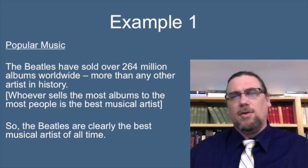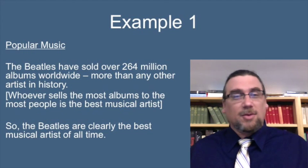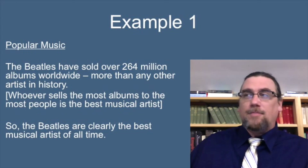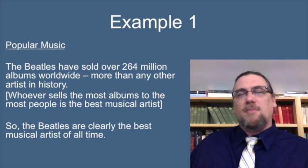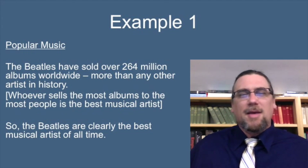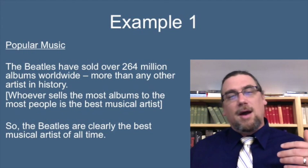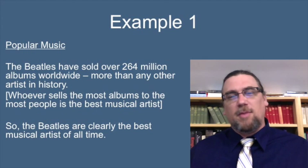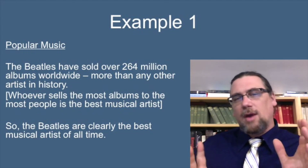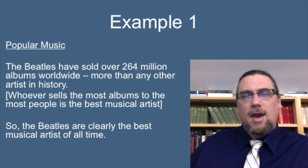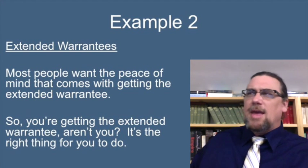Let's look at some examples. Example one: popular music. The Beatles have sold over 264 million albums worldwide — more than any other artist in history. So the Beatles are clearly the best musical artist of all time. That doesn't seem to follow, does it? The implicit premise you have to assume to make it work is: whoever sells the most albums is the best musical artist. Once you lay that out explicitly, you can see this is a fallacy.